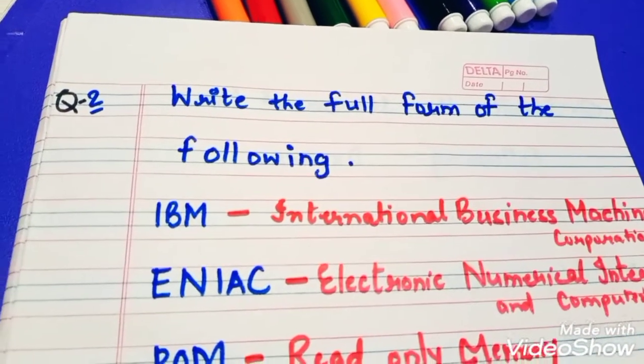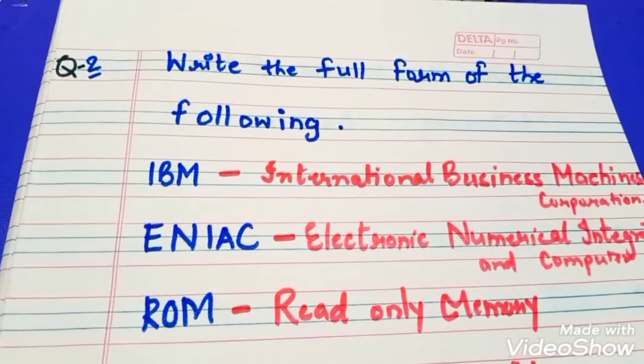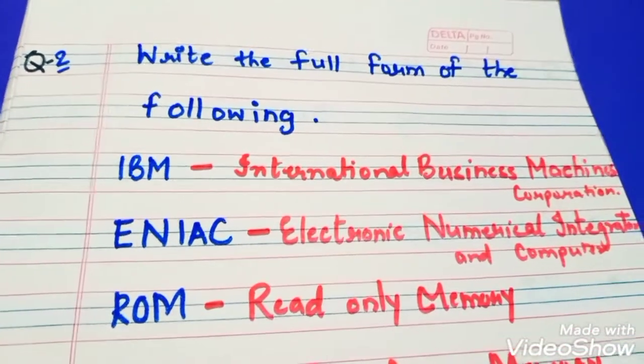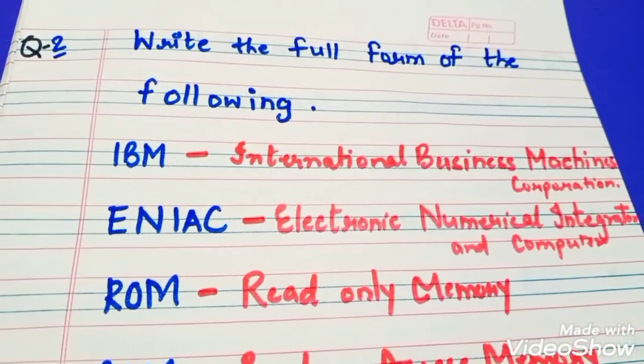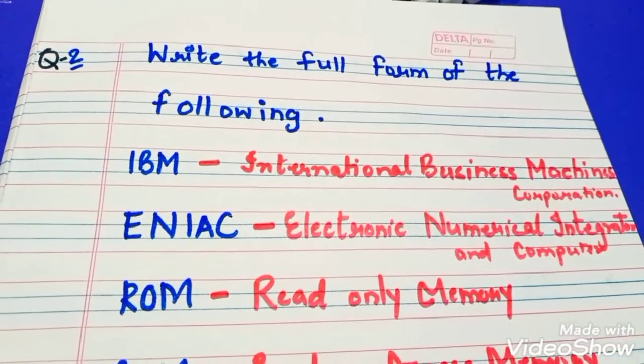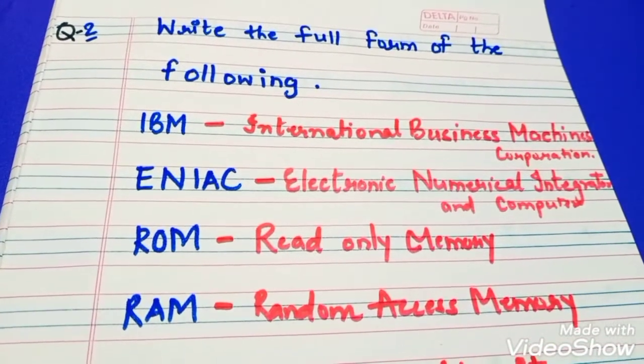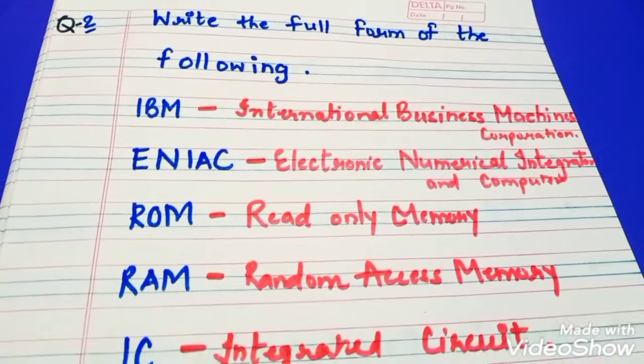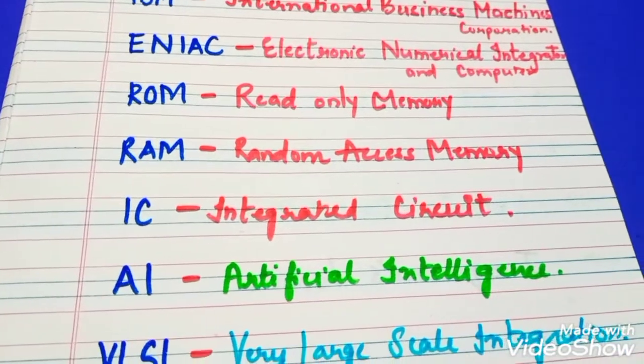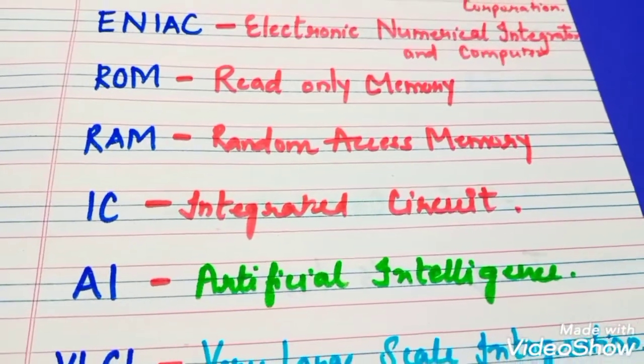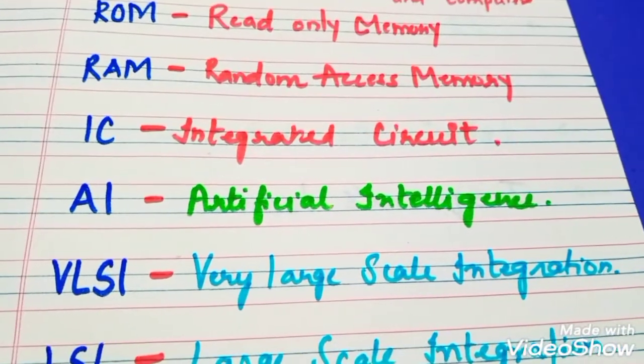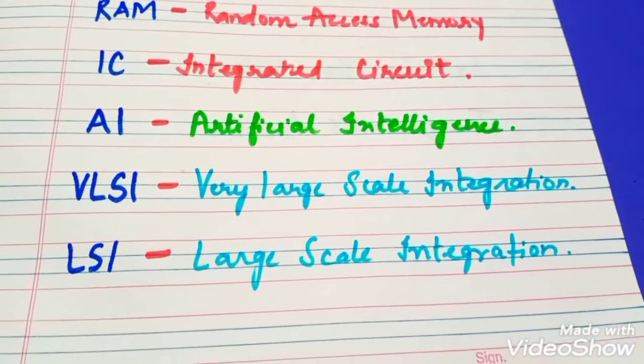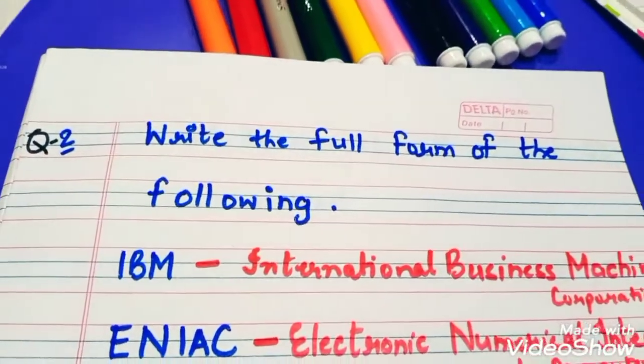Write the full form of the following: IBM - International Business Machines Corporation. ENIAC - Electronic Numerical Integrator and Computer. ROM - Read-Only Memory. RAM - Random Access Memory. IC - Integrated Circuit. AI - Artificial Intelligence. VLSI - Very Large Scale Integration. LSI - Large Scale Integration. These are some full forms of the computer.